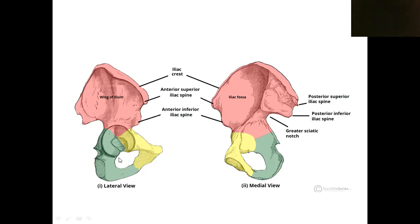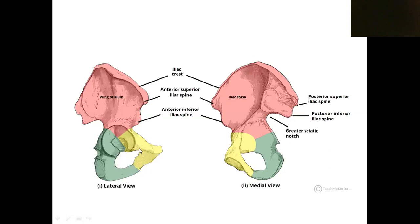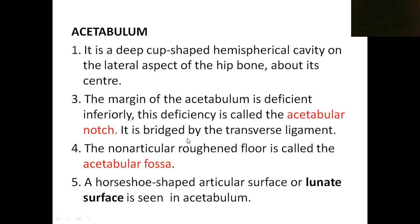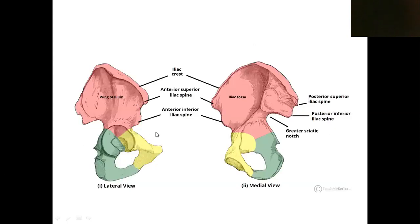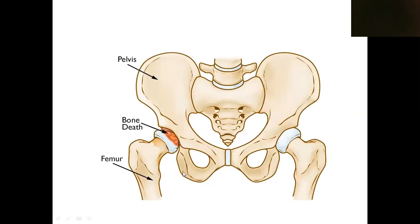The obturator foramen is oval in males and triangular in females. To summarize, the hip bone has three parts: ilium, ischium, and pubis, in addition to the obturator foramen and acetabulum. For remaining details, refer to your textbook.